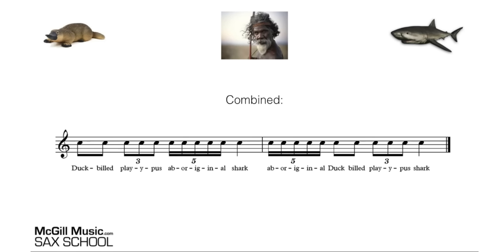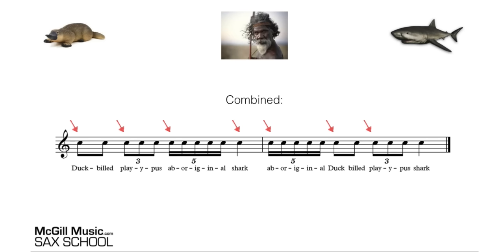Let's put those two things together into a pattern. On the first beat we've got duck-billed platypus, then aboriginal, and we'll stick a shark at the end of the bar. In the next bar, we've got aboriginal, duck-billed platypus, shark. Let's try doing that in time: duck-billed platypus, aboriginal, shark — aboriginal, duck-billed platypus, shark. That is a really tricky rhythm, but using the words, you can get the rhythm from the sound of the words — it's going to help you understand the music.